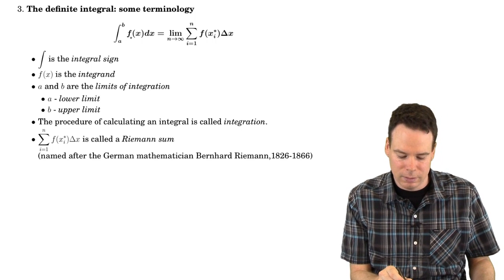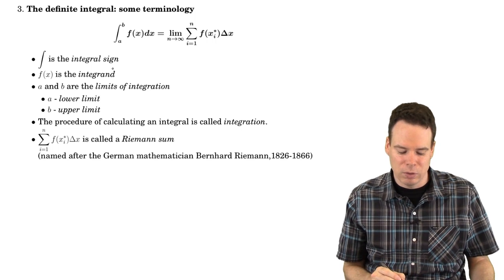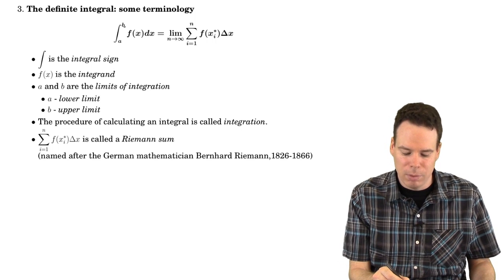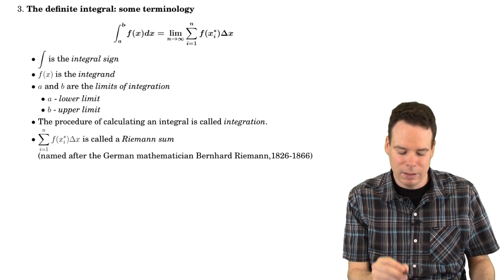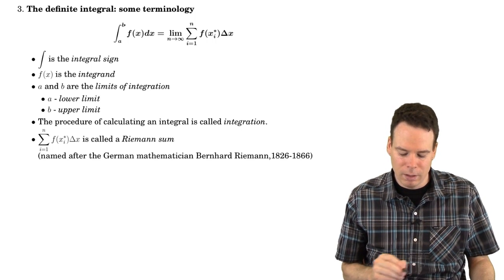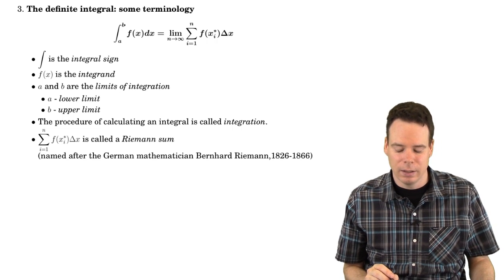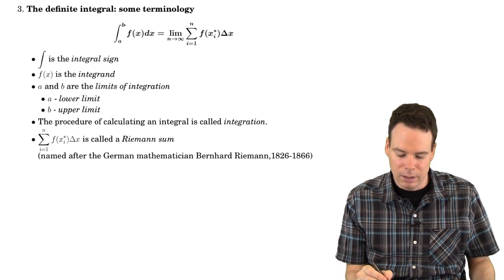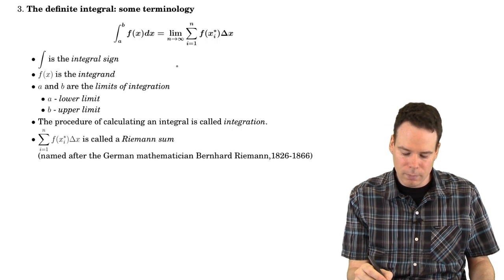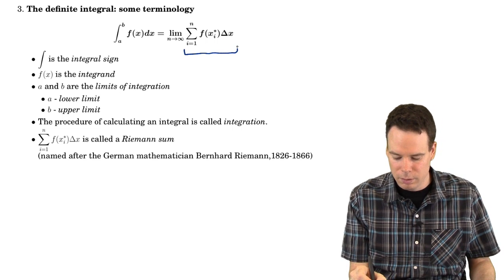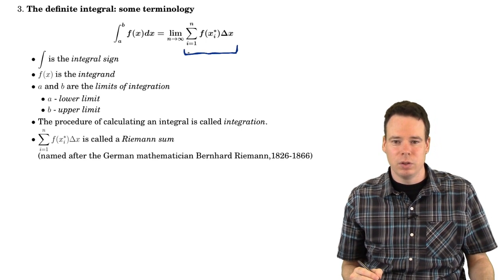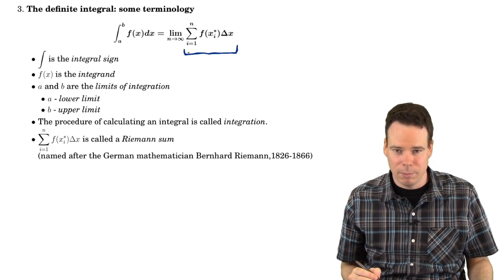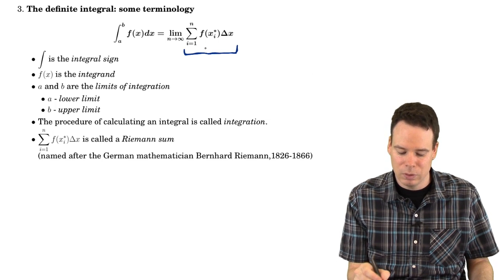The function f(x) is known as the integrand. a and b are known as the limits of integration — a is the lower limit, b is the upper limit. The procedure of calculating an integral is known as integration. And the sum we've seen before is known as the Riemann sum. Integration can be thought of as the process of taking the limit of a Riemann sum.